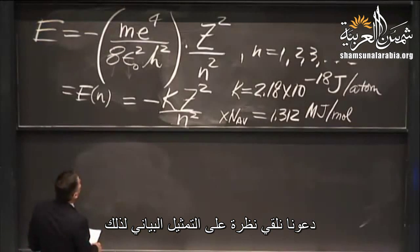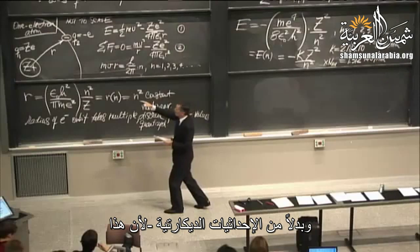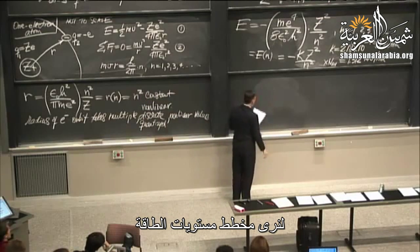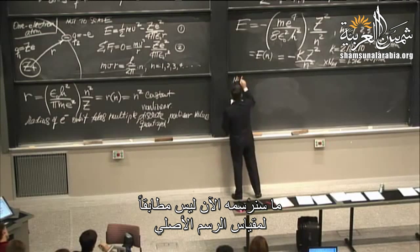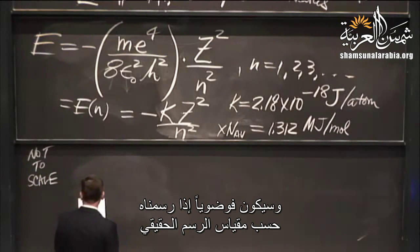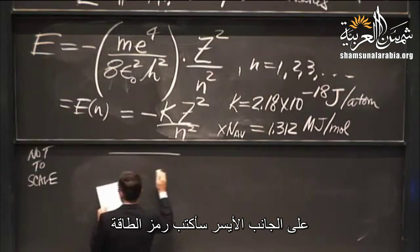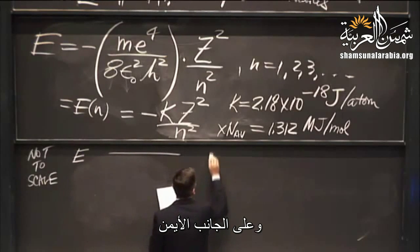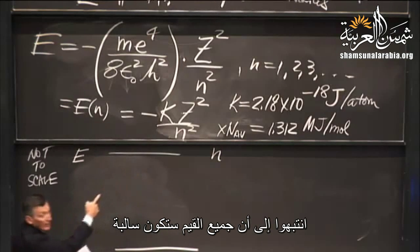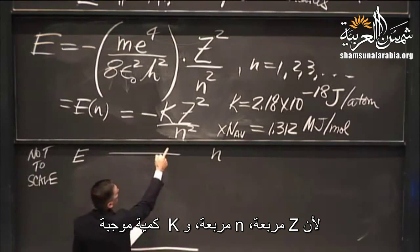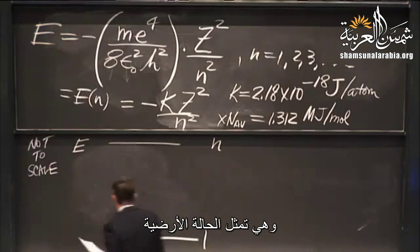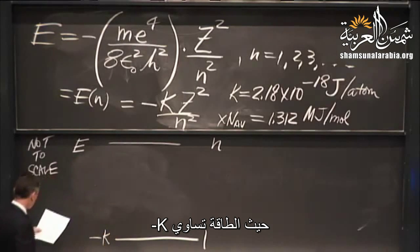Let's look at the graphical representation — an energy level diagram. On the left side I designate energy, on the right the quantum number. These are all negative values because Z and n are squared and K is positive. N equals 1 is the ground state — lowest energy — with value −K. For atomic hydrogen with Z = 1, n = 2 gives −K/4, n = 3 gives −K/9, and so on. It's nonlinear.